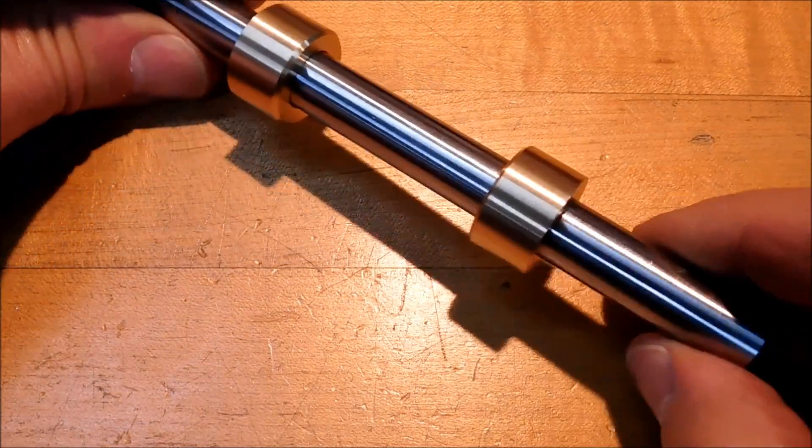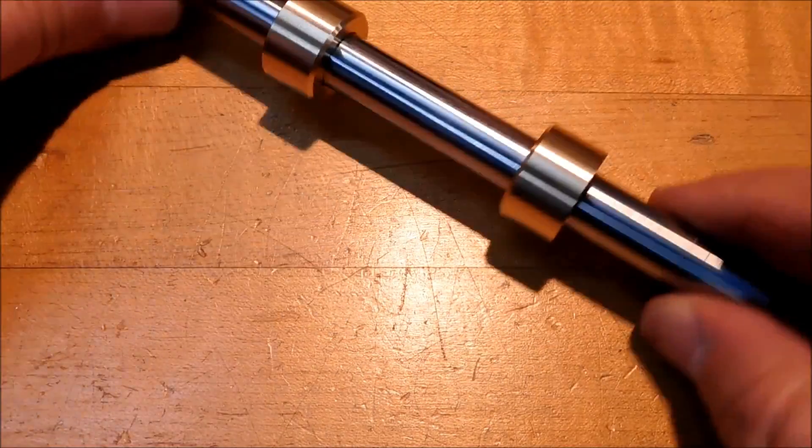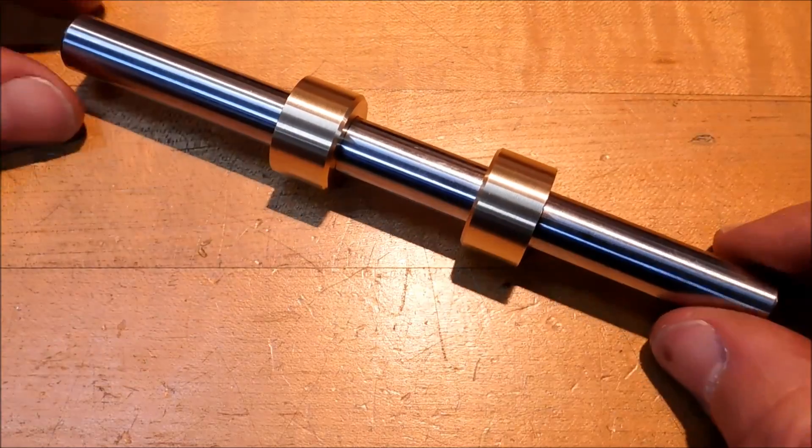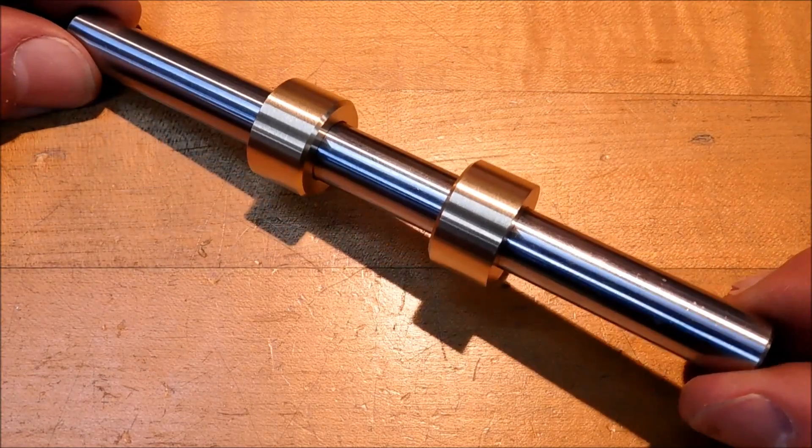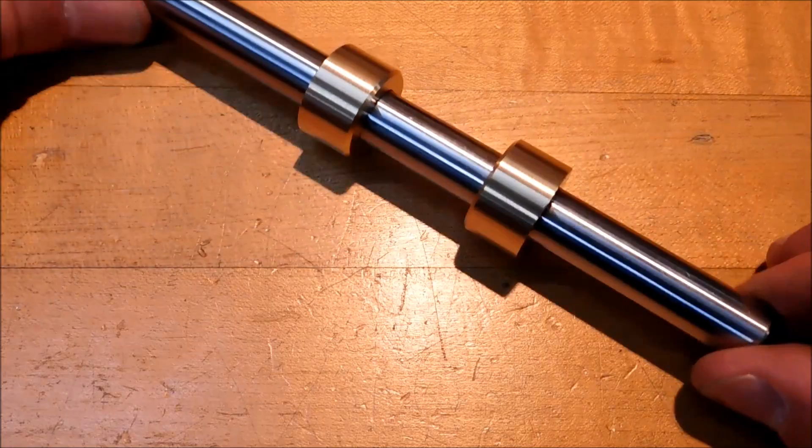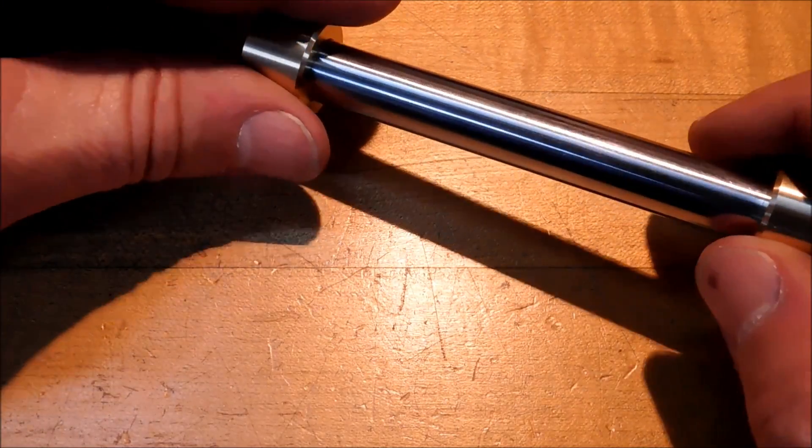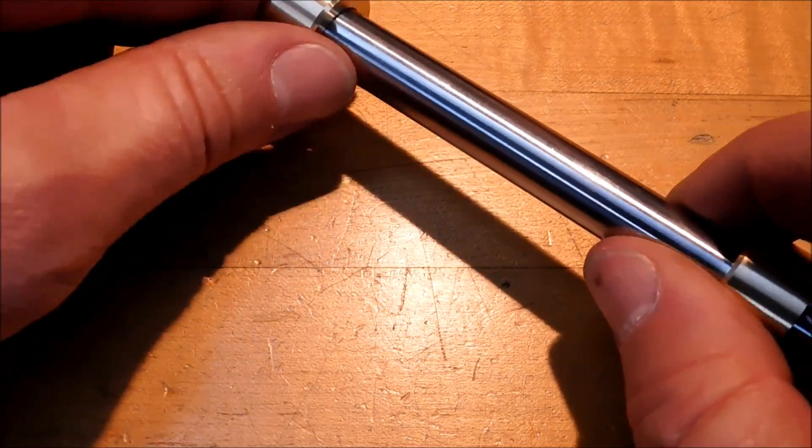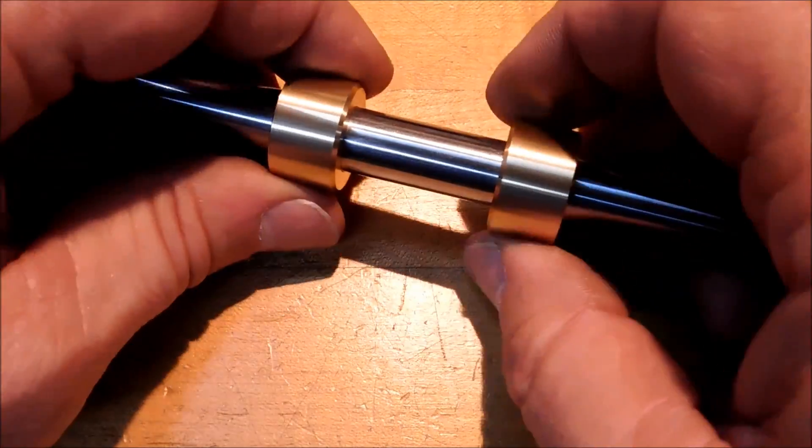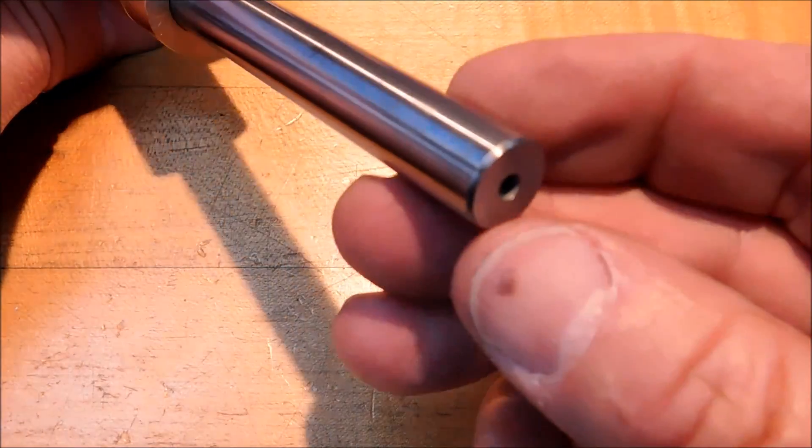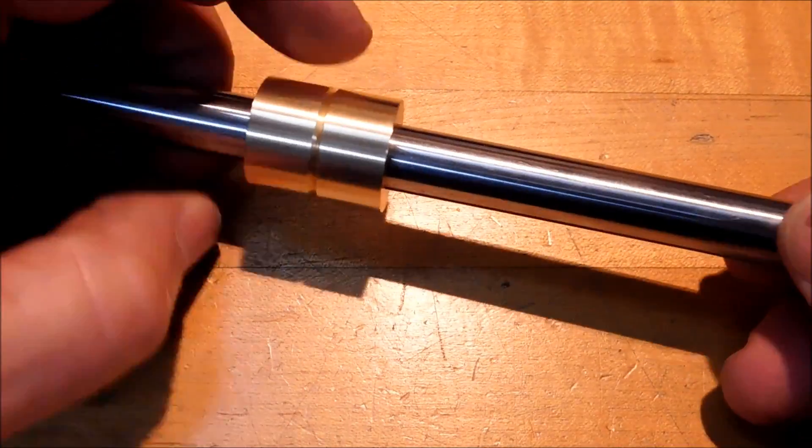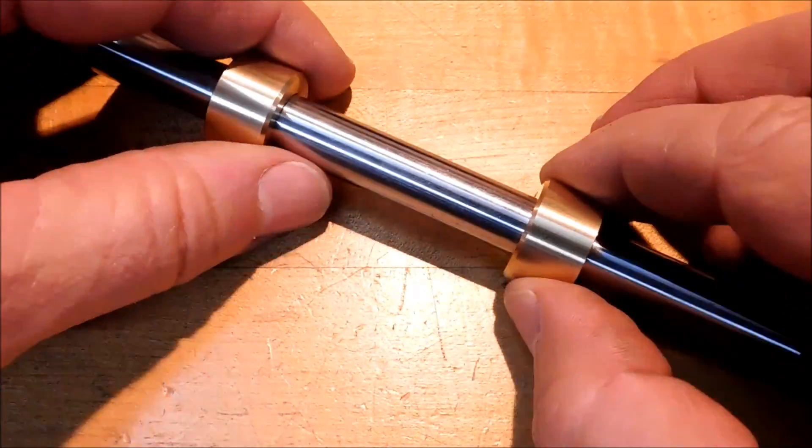Alright, we're going to play the 'what is it' game. This is one of my tools I made. This has got some real utility to it. These are half inch diameter brass bushings, really nice fit. This is a high speed steel ground rod, ground between centers. It's perfectly straight.